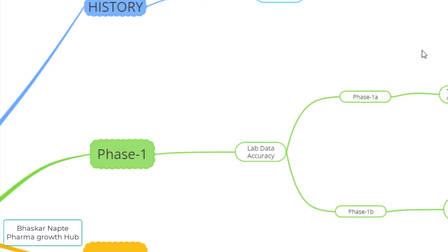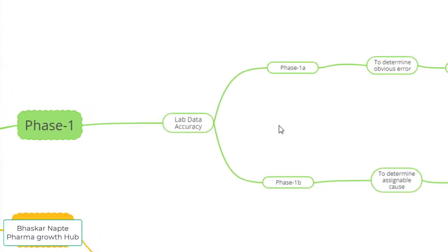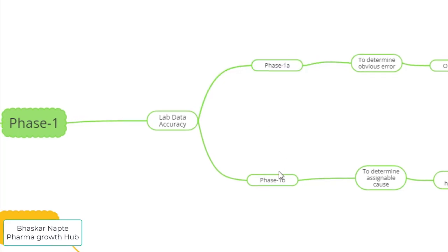According to the US FDA guidance document on OOS, you will find Phase 1, Phase 2, and Phase 3. The purpose of Phase 1 is to confirm the accuracy of the analytical result — to understand whether the lab data is accurate or not. EMA has further segregated Phase 1 into Phase 1A and Phase 1B, which, though not explicitly in the US FDA guidance document, is very much part of the overall guidance framework.